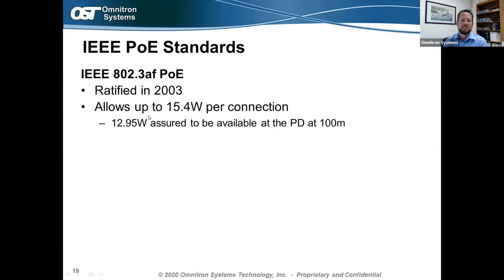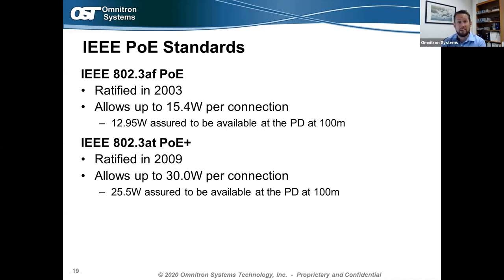The first IEEE PoE standard is 802.3af, ratified in 2003, which allows up to 15.4 watts per port delivered to a powered device, with 12.95 watts assured at the end of 100 meters. As more power-hungry devices came to market needing up to 30 watts, the IEEE ratified 802.3at — PoE+ — in 2009, allowing up to 30 watts over copper cabling with 25.5 watts assured at 100 meters. A memory tip: 'AT' equals PoE+ or 30 watts.